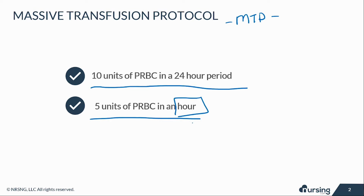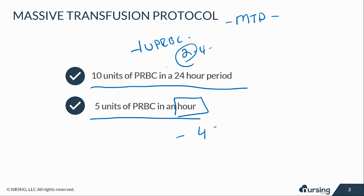Some hospitals will activate an MTP when four components of blood products are administered within 30 minutes. Remember that when we give one unit of red blood cells, we usually do this in about two hours — four would be the max. When somebody needs 10 or more in a 24-hour period, that's when you have to take other precautions.